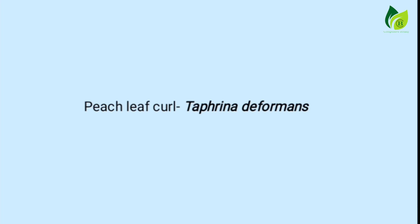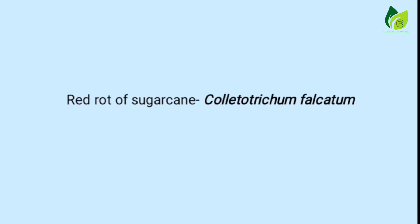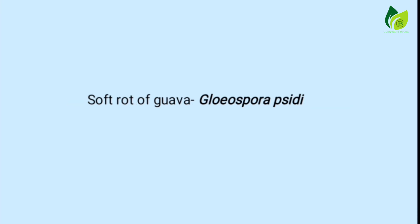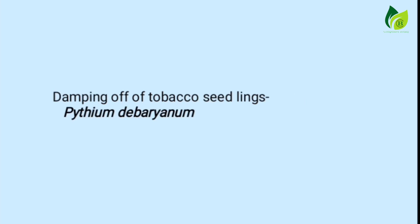Peach leaf curl caused by Taphrina deformans. Red rot of sugarcane caused by Colletotrichum falcatum. Soft rot of guava caused by Gliospora. Damping off of tobacco seedlings caused by Pythium debarianum.